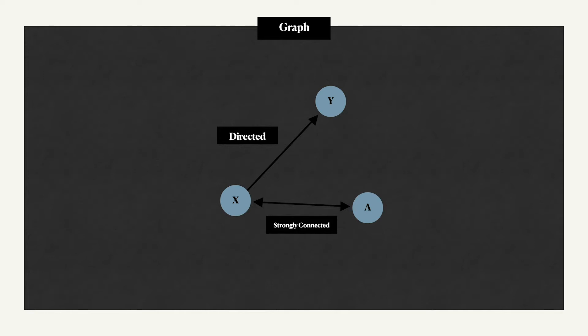And in an undirected graph, the edges are just lines connecting the nodes. These arrows can go one way or both ways. When they go both ways, we say that the nodes are strongly connected.